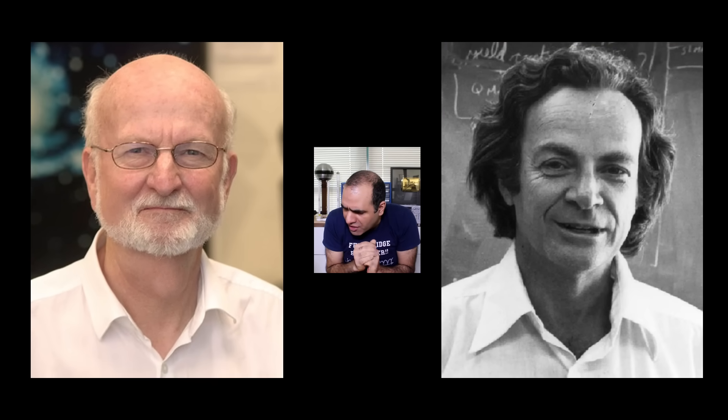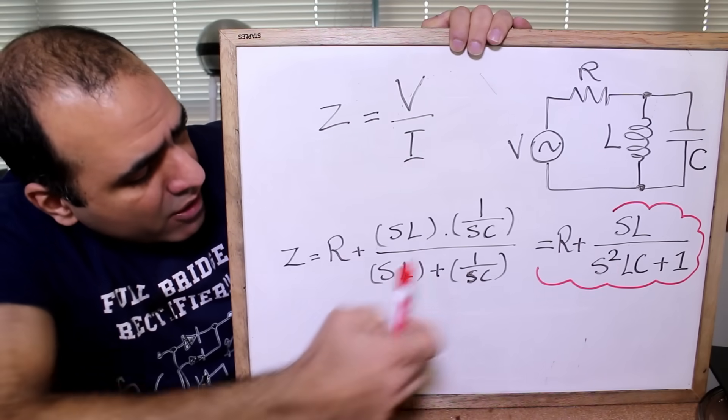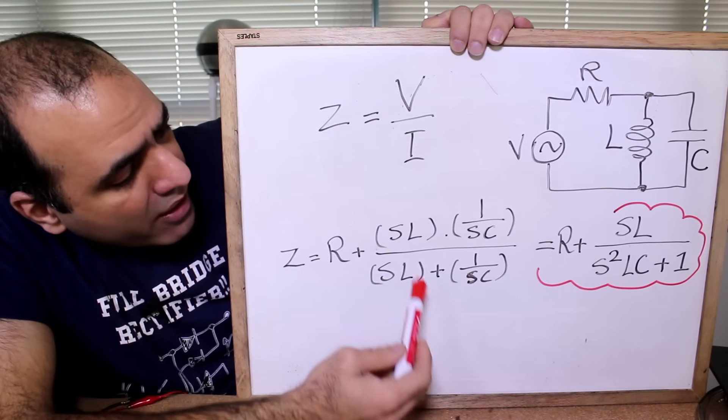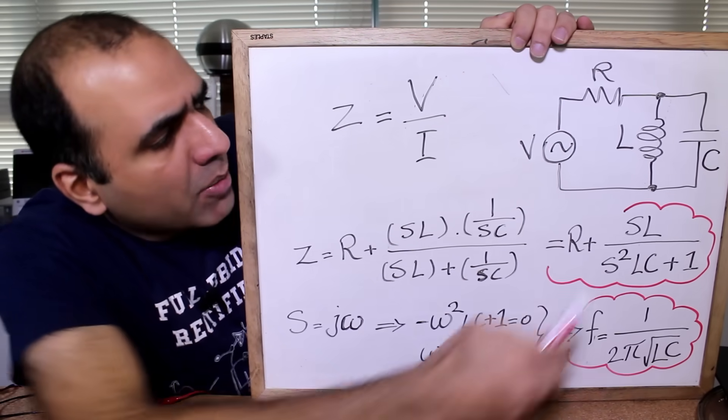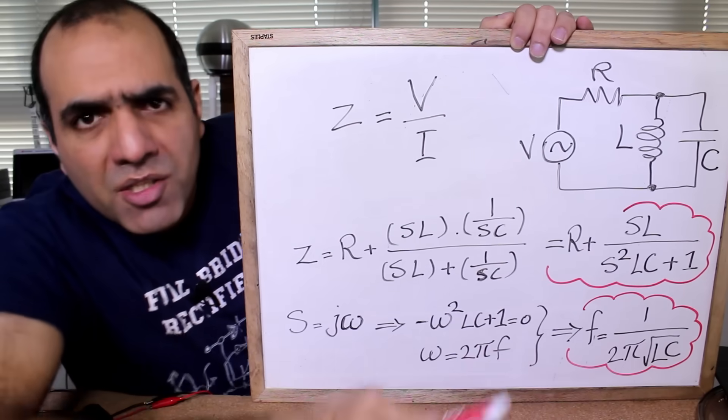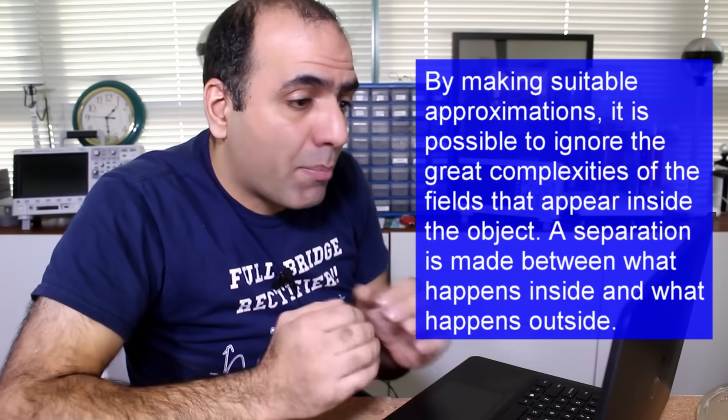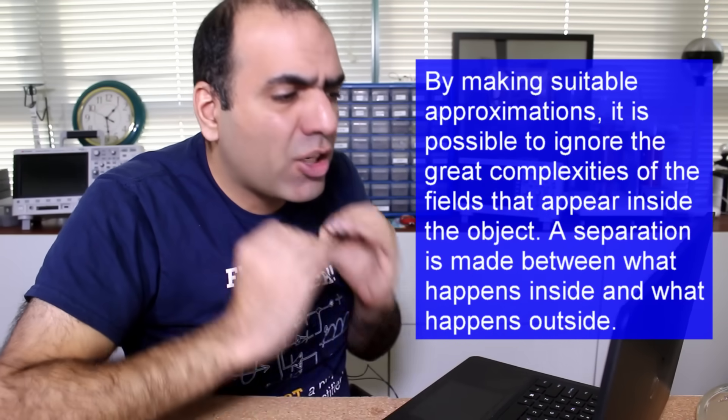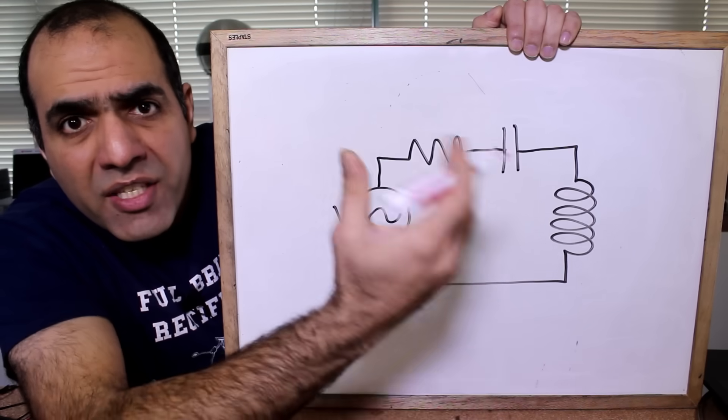But then you might ask if KVL and Faraday's law do the same thing, why do I push for KVL? It's because KVL is much easier to work with over time and frequency domains. See, if you have a circuit like this, knowing that KVL holds, it's very easy to calculate the circuit impedance, which is that resistor in series with these two in parallel, which is the impedance of the inductor times impedance of the capacitor over this plus that, which is equal to that. I can easily calculate my LC resonance frequency by finding where this becomes zero. I just replace S with j omega and calculate my frequency. Feynman book explains that by making suitable approximations in a lumped model, it is possible to ignore the great complexities of the fields inside the object. A separation is made between what happens inside and what happens outside.